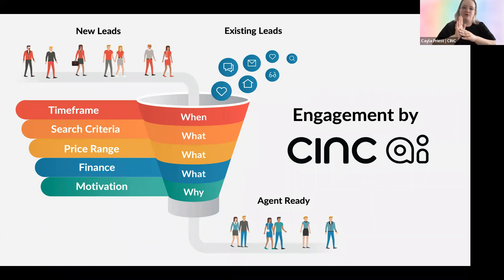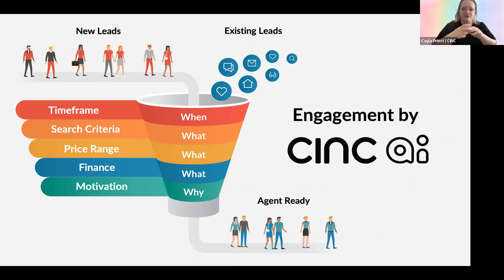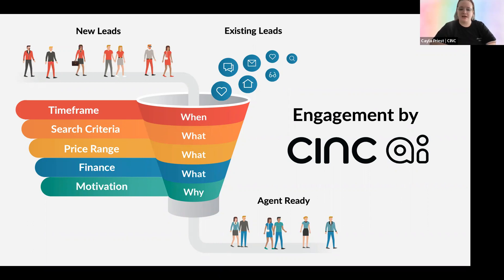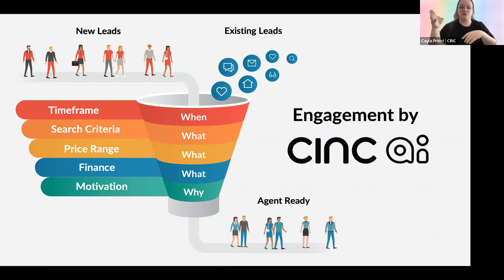An existing lead can be someone who's been on the site but maybe never answered a phone call or got back in touch. What we have it work with is behavioral messaging — so when leads perform certain actions on the site, like opening an email after a long absence or updating a phone number, and the lead responds to those behavioral messages, AI can pick up that conversation and carry it again until they're agent ready, meaning ready to talk to an agent about their home search. So it is really two-pronged, working with new and older active leads.